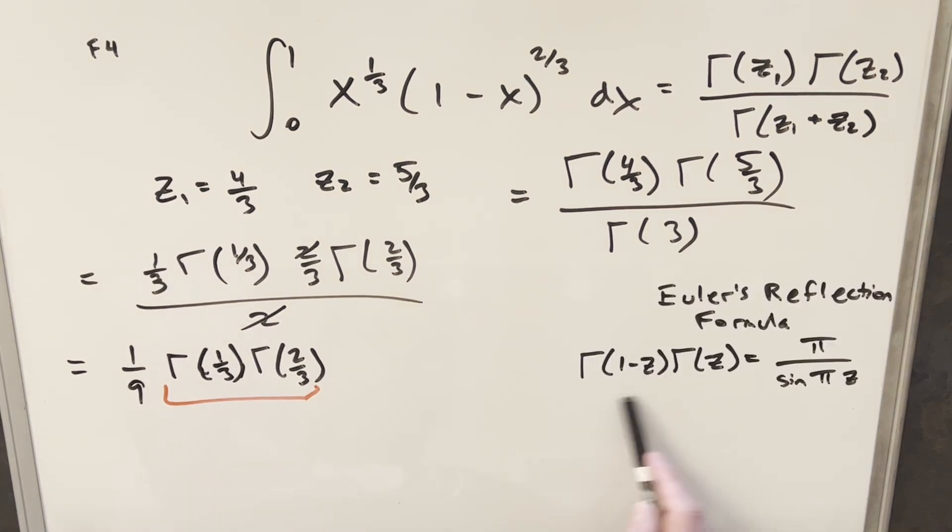Okay, now we have Euler's reflection formula over here on the right. And you'll notice that our gamma 1/3 times gamma 2/3 is in exactly the right form here. You'll notice for this z value, it can be either 2/3 or 1/3, it's not going to matter. So let's just call z equal to 2/3. And then notice over here, 1 minus z, 1 minus 2/3 is just going to be 1/3. So again, we've got the same form over here. So what we're going to do is take this z value, and we just need to plug it in here to finish this thing off.